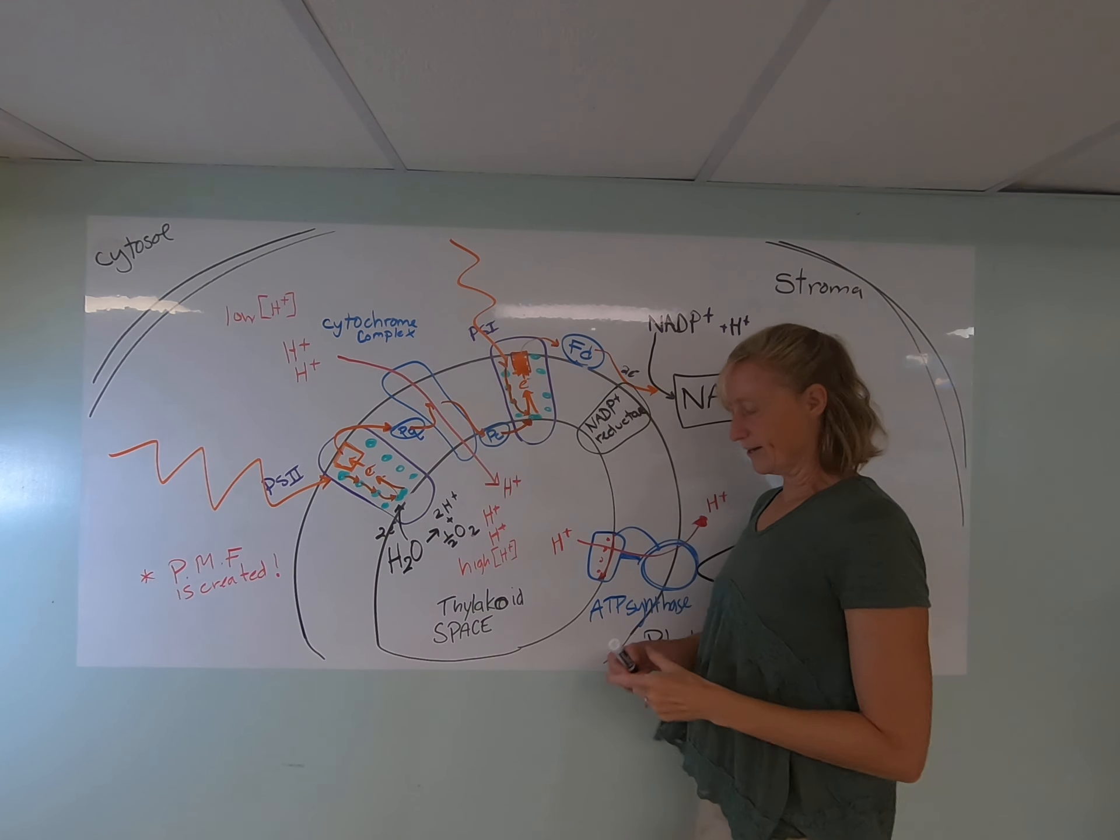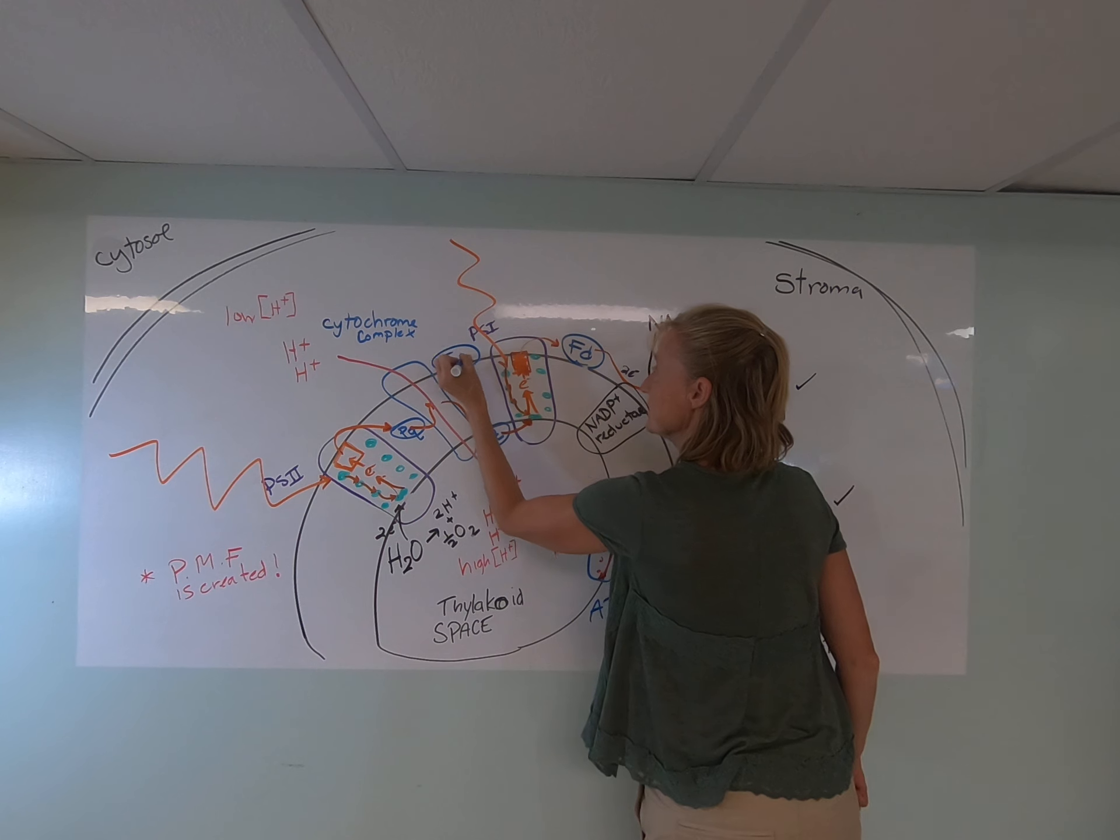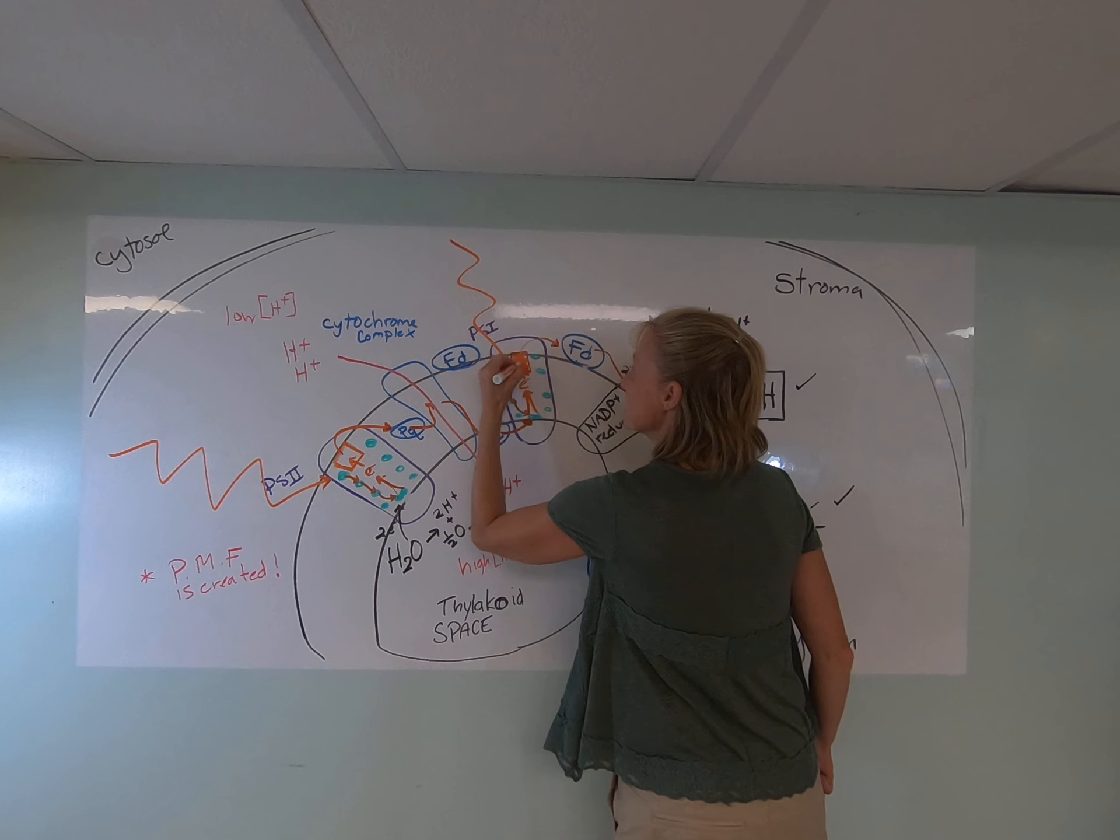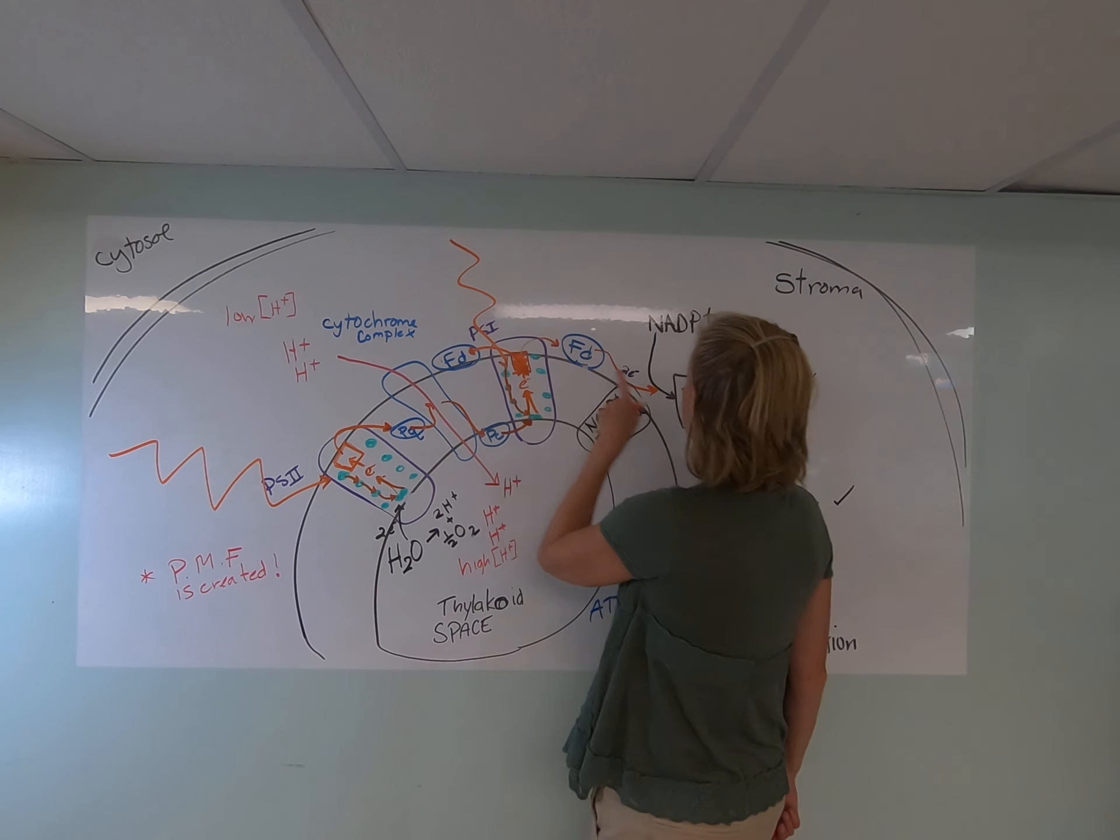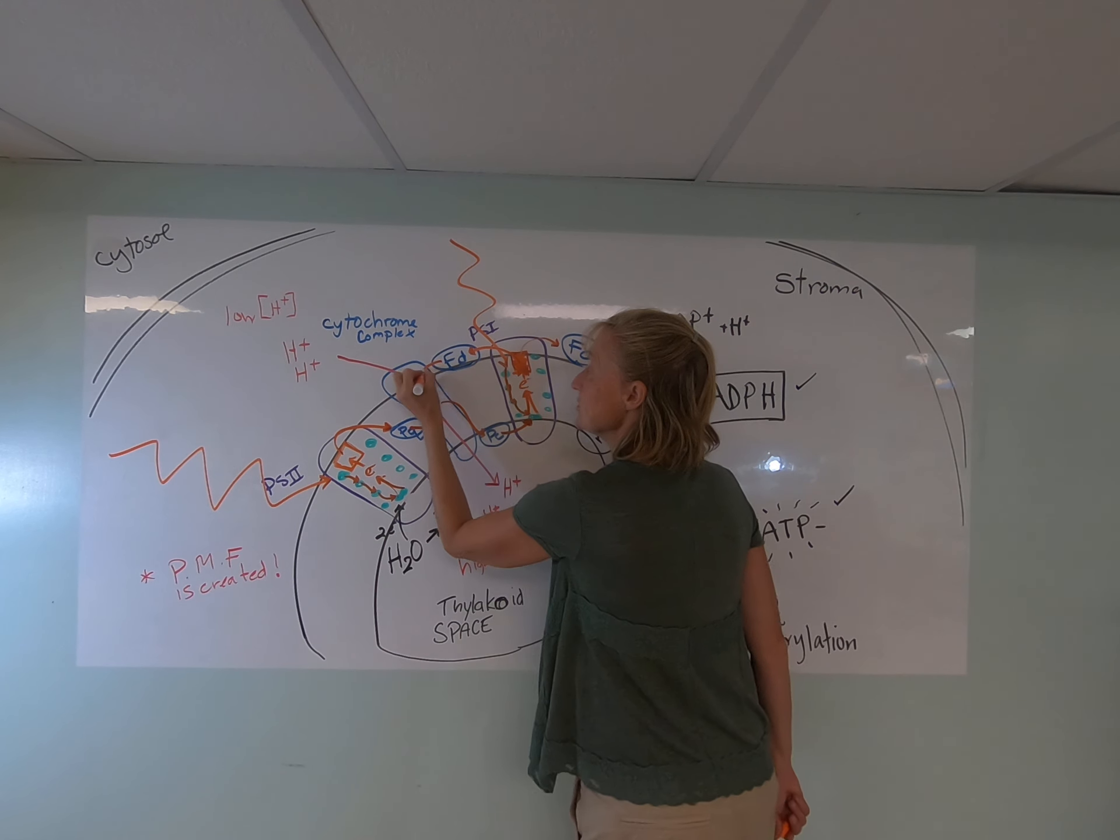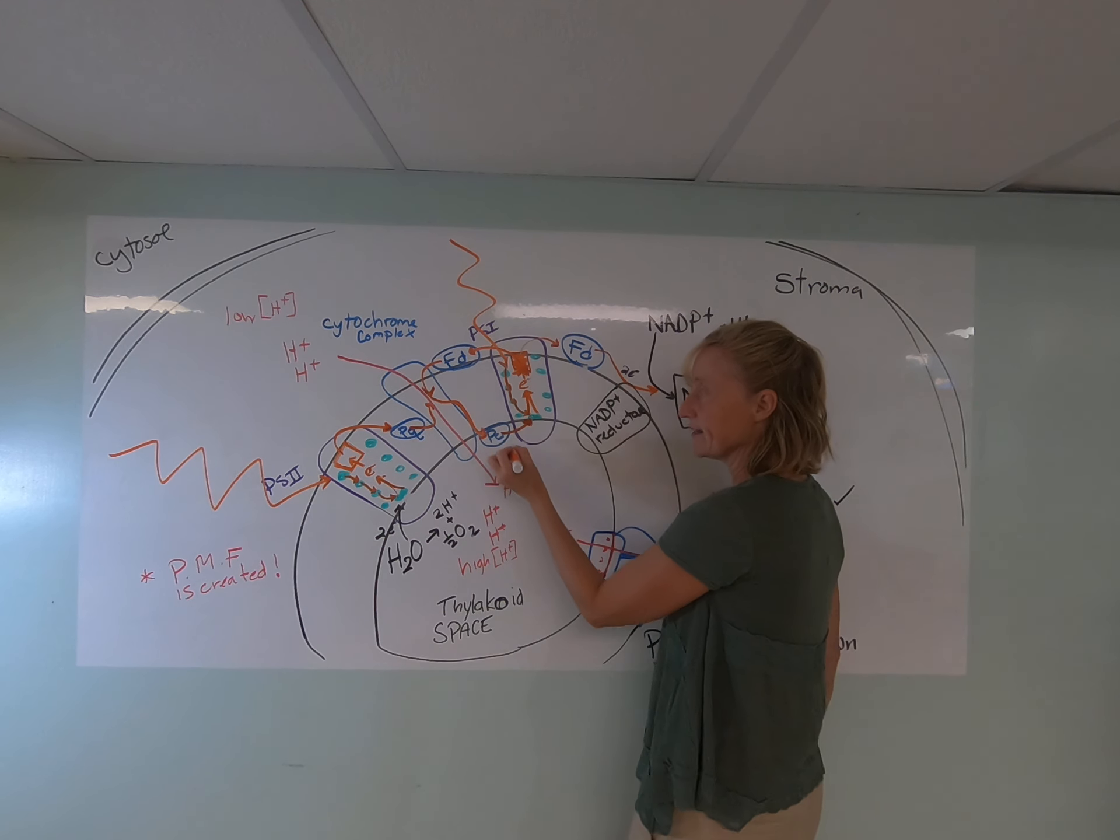Ferredoxin can be in a variety of places. Sometimes ferredoxin is closer to this cytochrome complex. So in cyclical electron flow, the electrons flow to ferredoxin. They're donated by a redox reaction. And then in cyclical flow, the electrons are not donated to NADP+, but they're donated to the cytochrome complex, where they flow down to plastocyanin